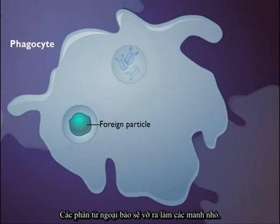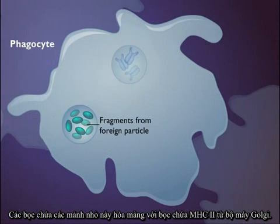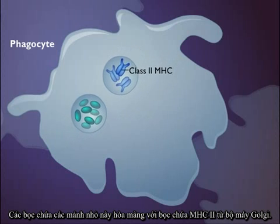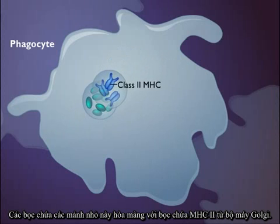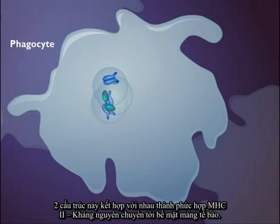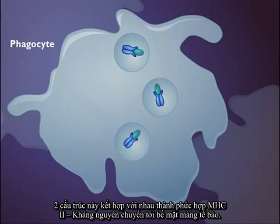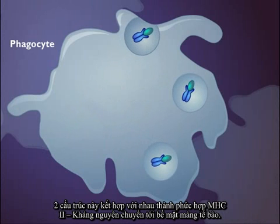The foreign particles are broken down into fragments within a vesicle. The vesicle containing the foreign fragments fuses with vesicles from the Golgi apparatus containing the class II MHCs, and the two structures combine. The MHC class II antigen complex is then transported to the plasma membrane.